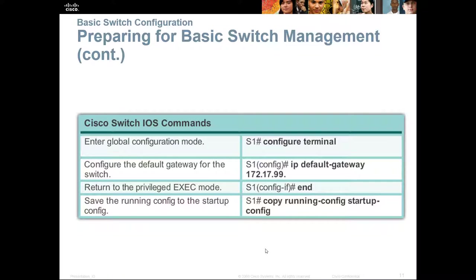To assign a default gateway, go to global configuration mode, type 'ip default-gateway' followed by the gateway address — including the correct fourth octet. Again, make sure you save a copy of the configuration.